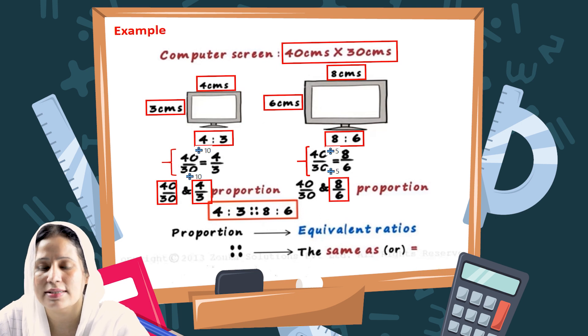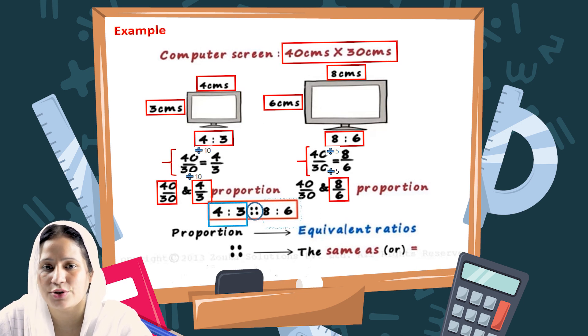Proportion is read in the form 4 ratio 3 double colon 8 ratio 6. Proportion 4 by 3 is equal to 8 by 6. 4 by 3 is proportional to 8 by 6. Proportions are equivalent ratios, and double colon is said to be equal.